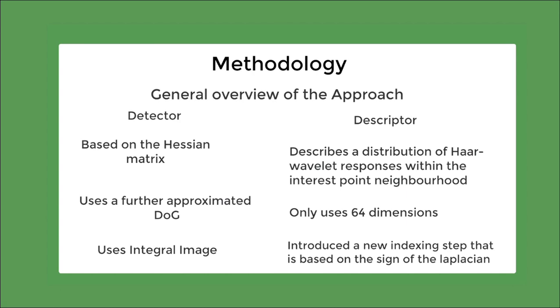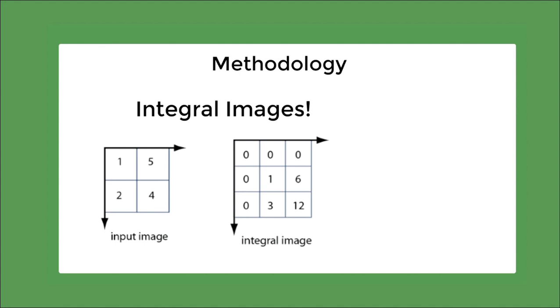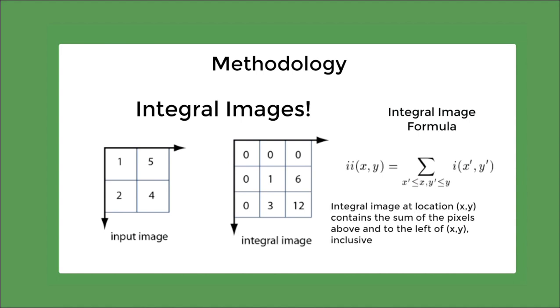Before we go to the fast Hessian detector, let's briefly discuss about the concept of integral images. As we can see, the input image consists of intensities 1, 5, 2 and 4. So, for computing the integral image, we replace every pixel by its sum of pixels above and to the left of the pixel location and also inclusive of the pixel itself. So, here you can see, 5 has been replaced by 5 plus 1 equals 6 and 4 has been replaced by 1 plus 5 plus 2 plus 4 equals 12 and so on.